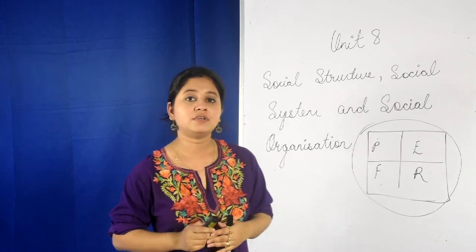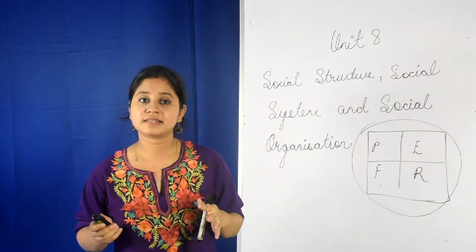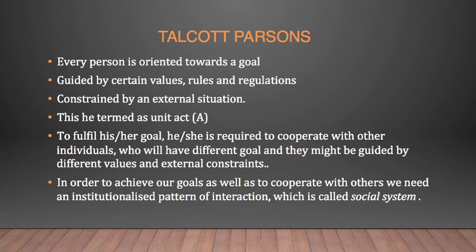Let us understand what Talcott Parsons has explained about social system. Talcott Parsons is a very famous sociologist. According to him, every individual is oriented towards a particular goal, and while pursuing that goal, the person is guided by certain values, rules, and regulations. At the same time, he or she is constrained by certain external factors.